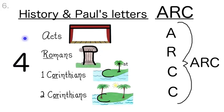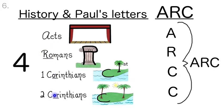The next group of four in Section 6 have the initials ARCC, that spells out ARC with a C. Acts is the history book, and Romans, 1 Corinthians, and 2 Corinthians are Paul's letters. These letters go together because of the long O sound they have, with an R before the O in Romans and after the O in Corinthians.